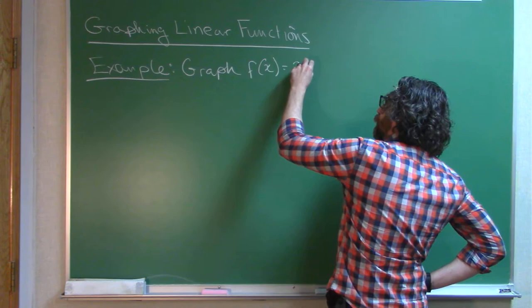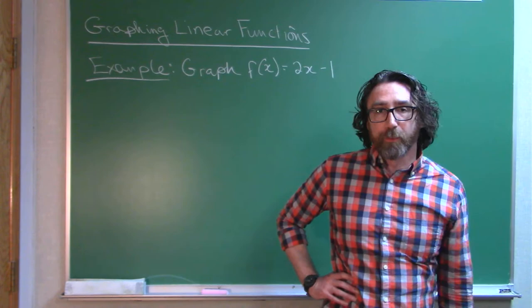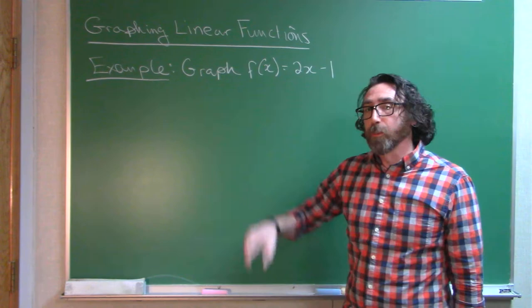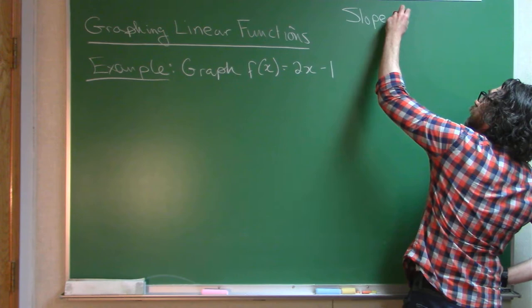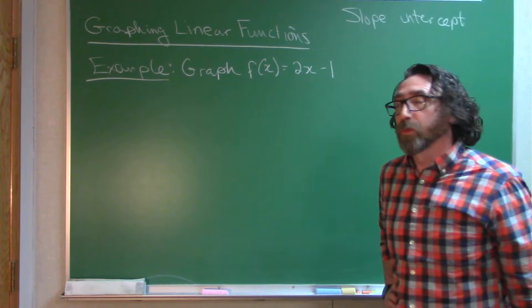Graph f(x) = 2x - 1. Now many of you are probably familiar with graphing lines already. The key thing to look at is the slope. Now most of the time we will be given a linear function in what is called slope-intercept form.